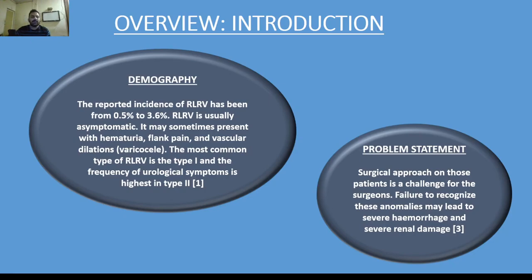Retroaortic left renal vein is usually asymptomatic. It may sometimes present with hematuria, flank pain, and vascular dilatation such as varicocele. The most common type is Type 1, and the frequency of urological symptoms is highest in Type 2. The surgical approach in these patients is a challenge for surgeons, as failure to recognize these anomalies may lead to severe hemorrhage and renal damage.